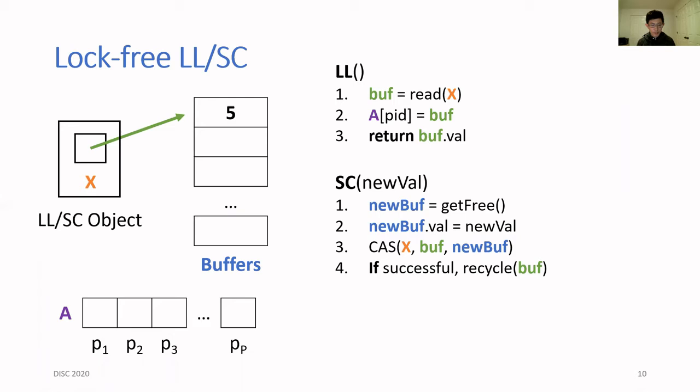To perform an SC operation, you would first allocate a new buffer and initialize it with the value you wish to write. Then you use compare-and-swap to change X to point to your new buffer, and the old value of this CAS is the buffer that you read during your previous LL operation.